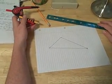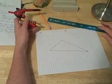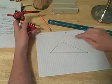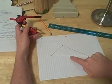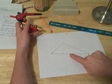Constructing the median of a triangle. A median is a segment that connects a vertex of a triangle to the midpoint of the opposite side.